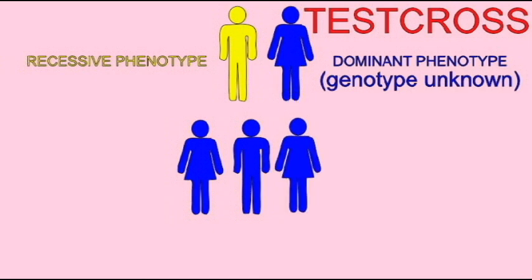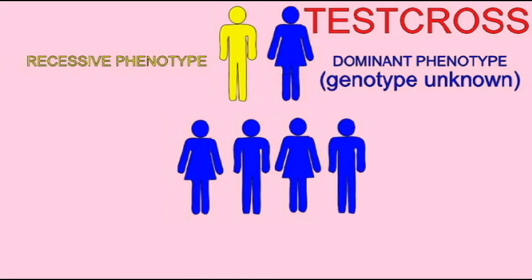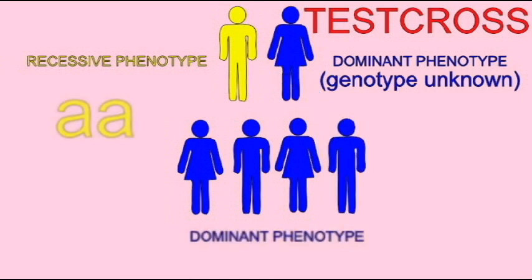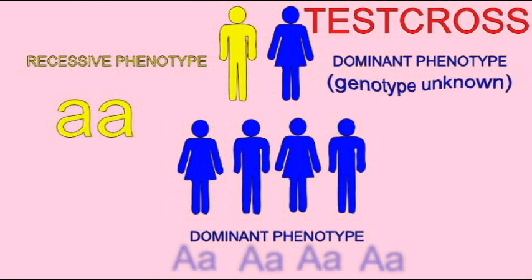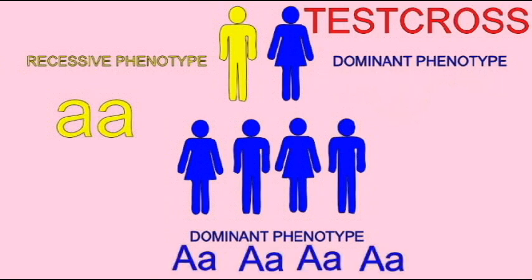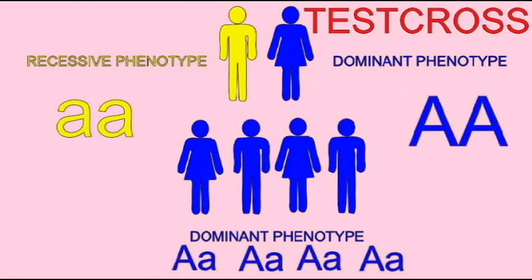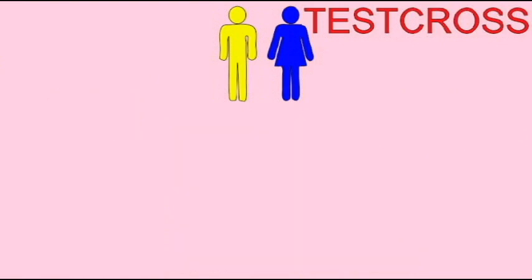If the individual with the dominant phenotype is homozygous dominant, they will give a dominant allele to all of their offspring. All of their offspring will thus be heterozygous and have the dominant phenotype.